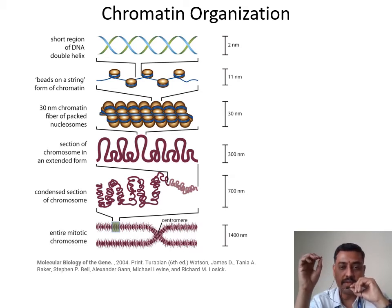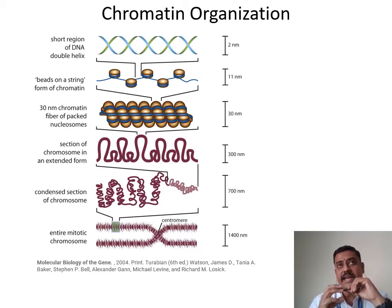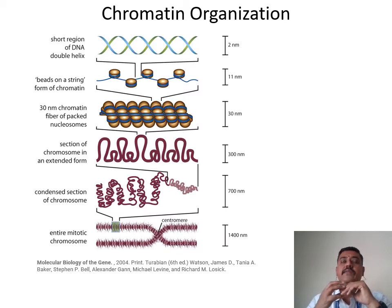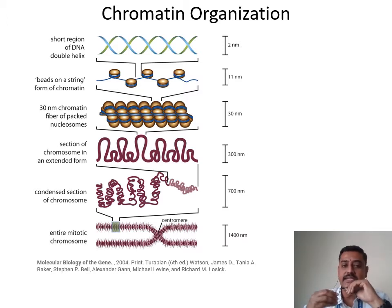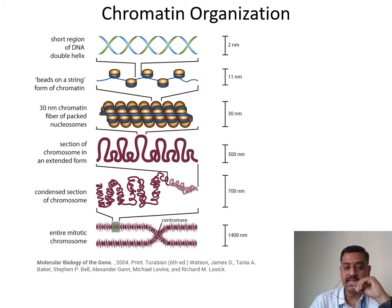The histone subunits join together as tetramer units, two tetramers combining to form an octamer. The DNA wraps around these octamer components, resulting in the generation of 30 nanometer chromatin fibers of packed nucleosomes. This structure is called the nucleosome.